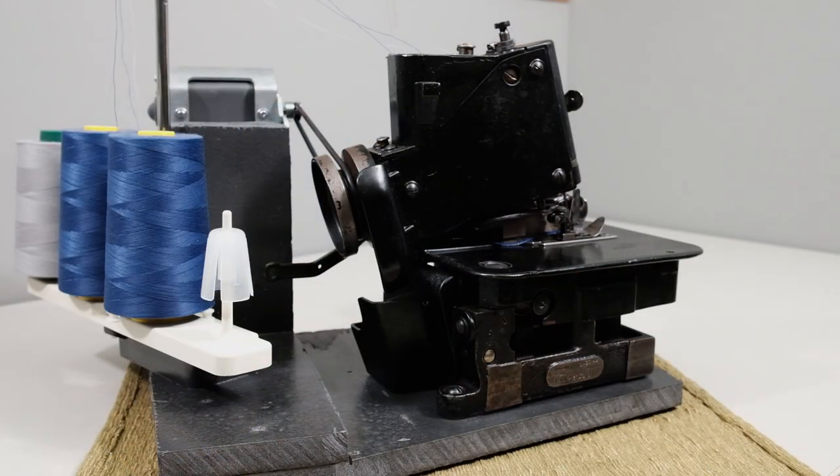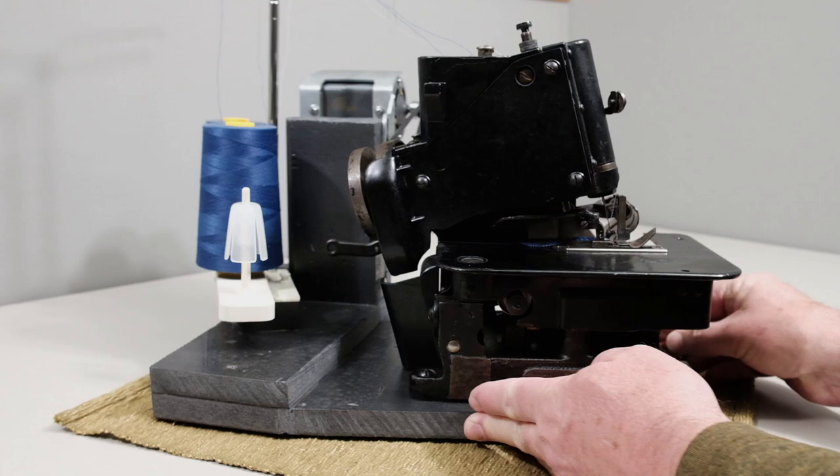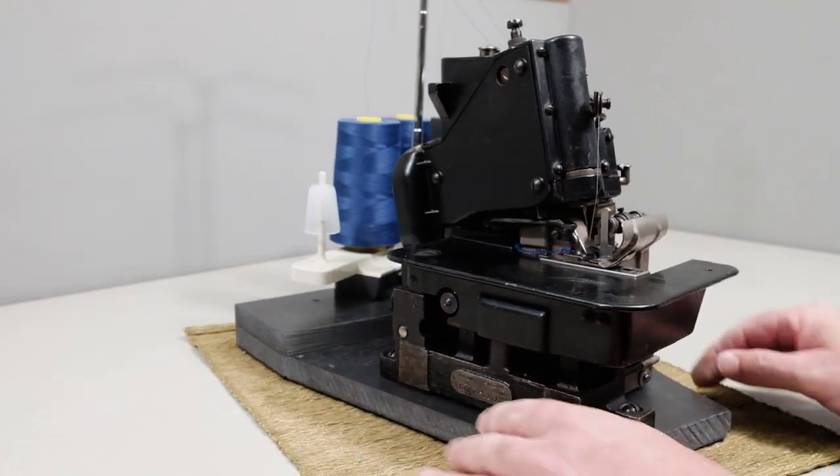This is going to be a quick video on my vintage Union Special 39200AE Overlock sewing machine. I'll spin the machine around here. I made up this little custom table to operate the machine.